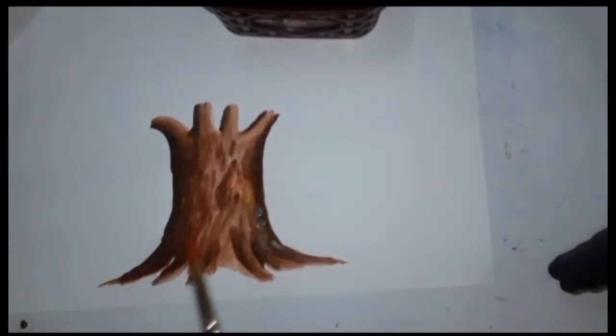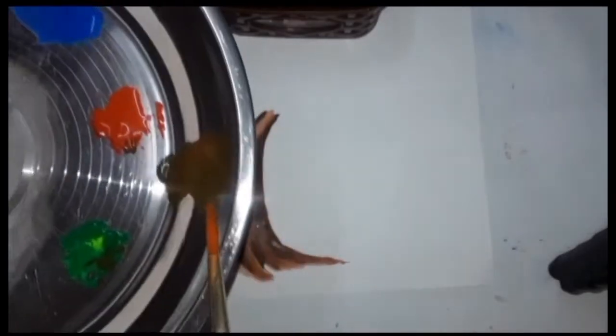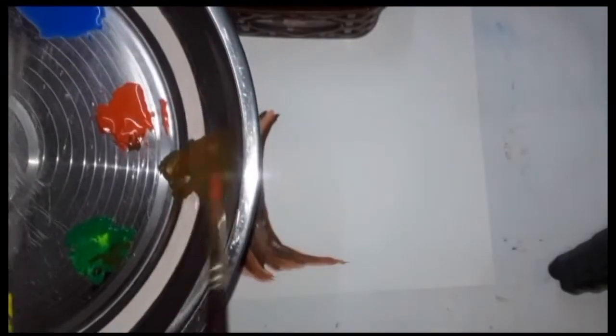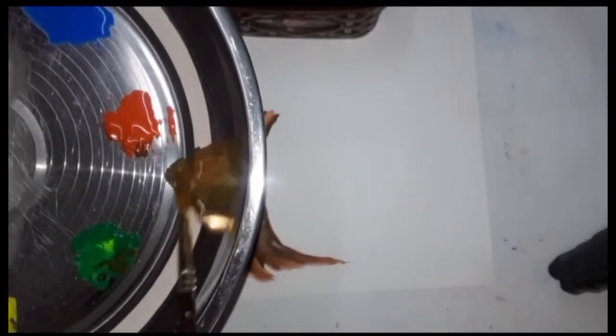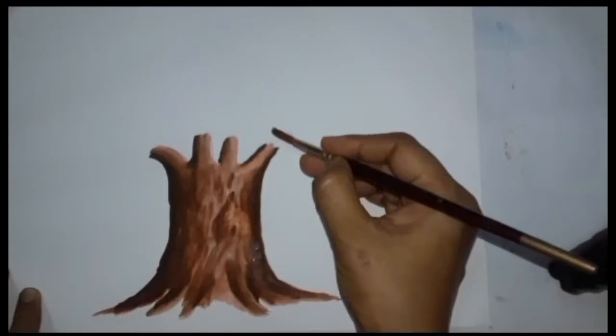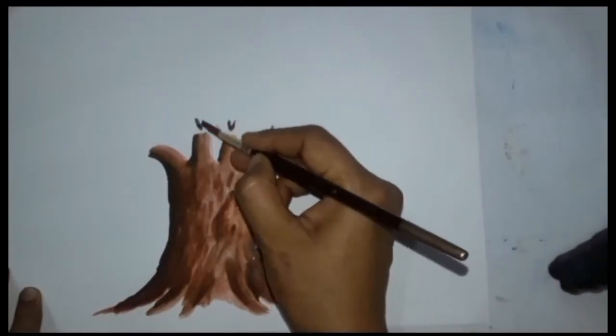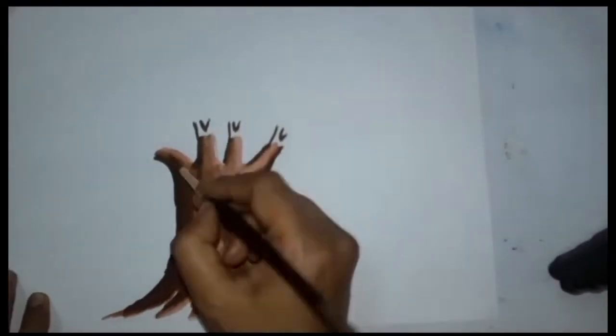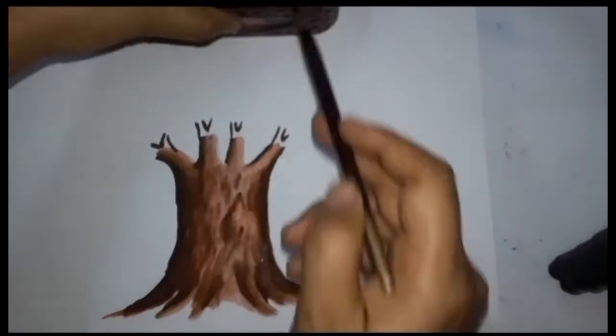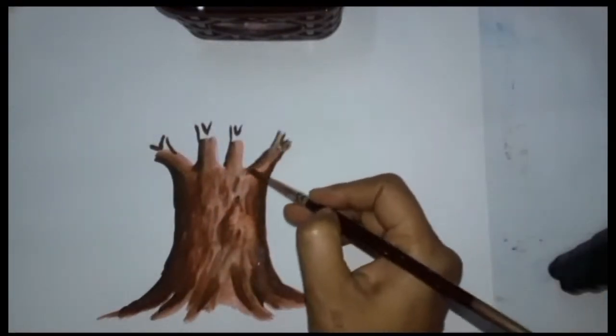Now we will make some more branches on top of the tree trunk using dark brown color again. We will use the water again in the brush as before.